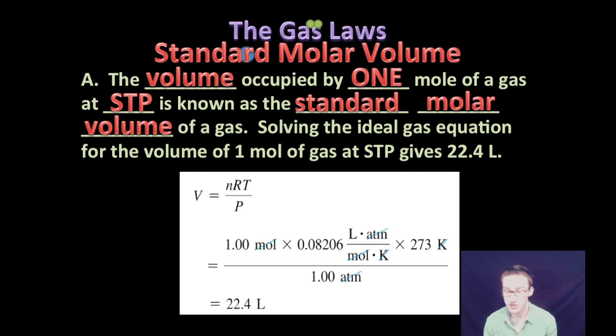So just some quick notes to start us off. The volume occupied by one mole of a gas at STP is known as the standard molar volume of that gas. One mole! Just one! Solving the ideal gas equation for the volume of one mole of gas at STP gives us 22.4 liters.